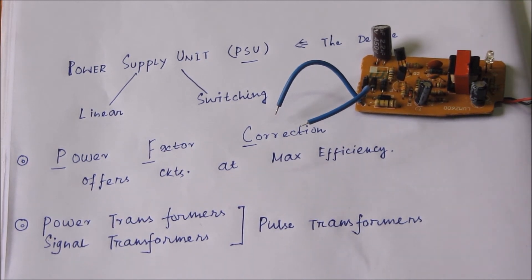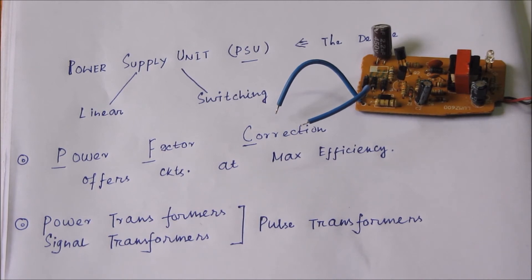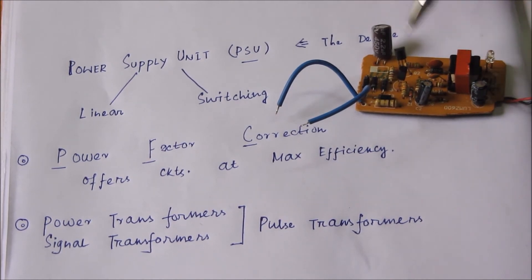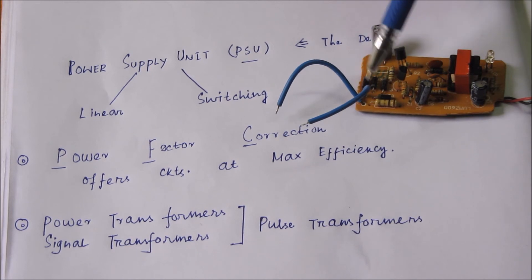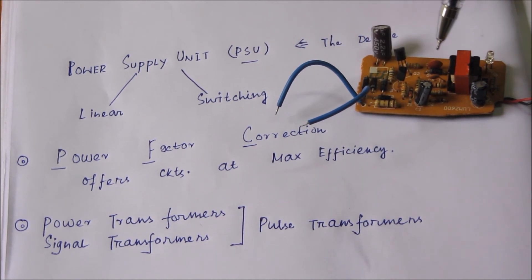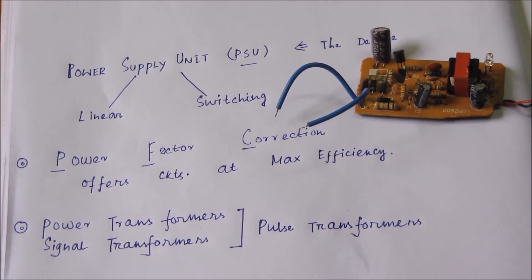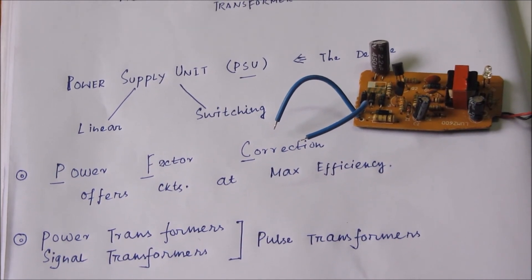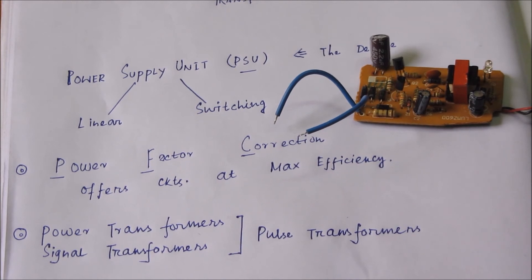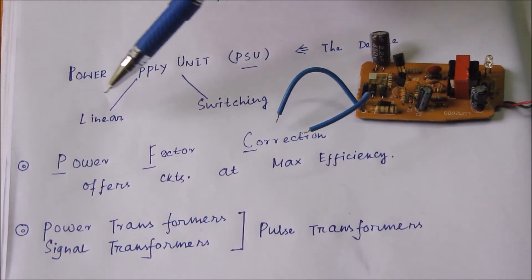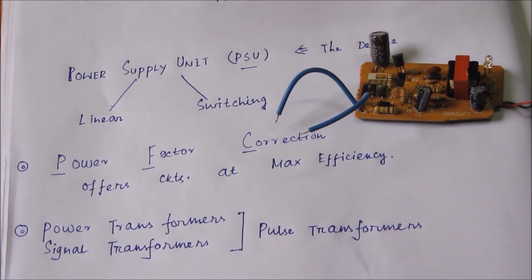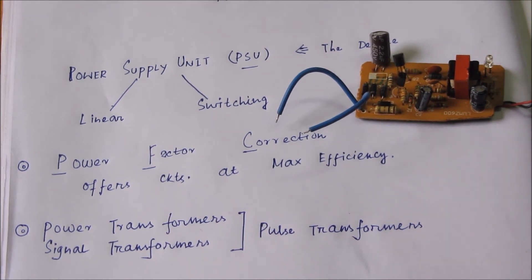A power supply unit is a device which can convert electrical energy into a state where some parameters of the electrical energy are changed as per our requirements. In this case, the 50 Hz AC supply given as input through the two blue wires is converted — when the same input is given to the transformer, the frequency is enhanced to a much higher value. Power supply units can be divided into linear and switching types; this is a switching mode power supply.